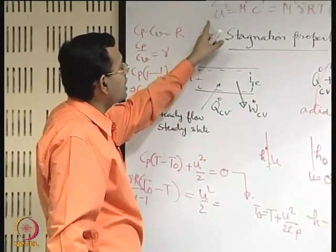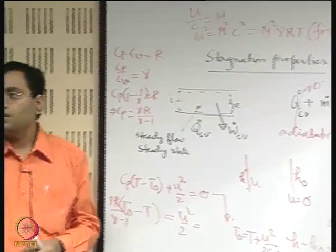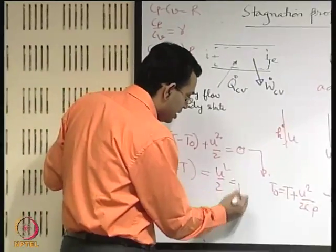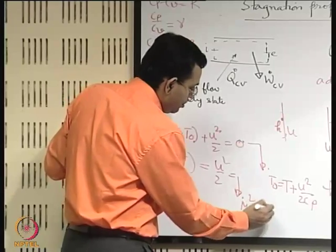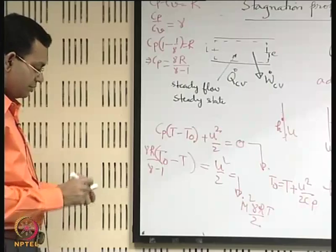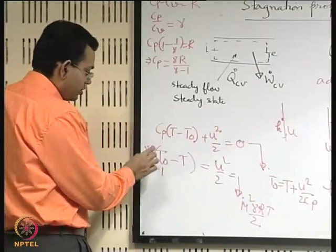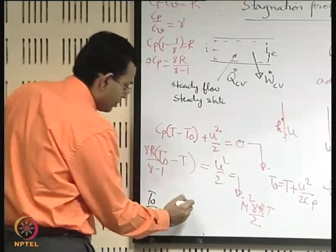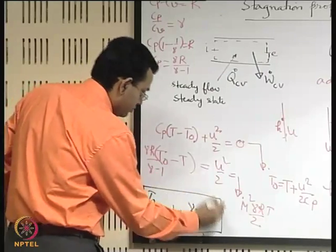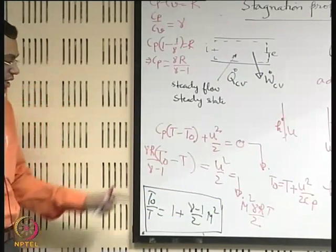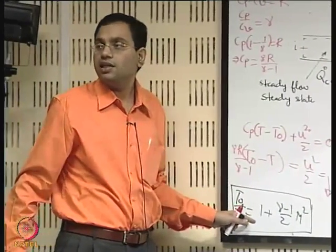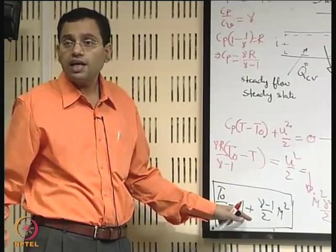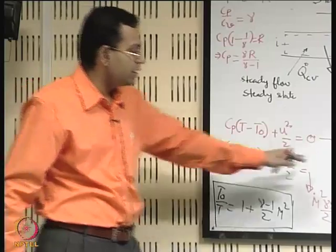If you use the expression u² = M²γRT, you impose the additional constraint that it is an isentropic process — a reversible process. For an isentropic process, γR cancels from both sides, and we get: T₀/T = 1 + (γ-1)/2 · M². This is the relationship between stagnation temperature and temperature at a point. This is valid under the assumption of isentropic flow; otherwise the more general expression T₀ = T + u²/(2c_p) must be used.